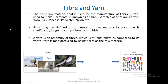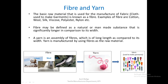A yarn, on the other hand, is an assembly of fibers which is of long length as compared to its width. It is similar to the fiber but it is an assembly of the fibers that we have just seen. Yarn is manufactured by using fibers as the raw material. So yarn is an intermediate stage where fibers are taken, converted into yarn, and then the yarn is used to make the fabric, which is then converted into a garment of our choice.